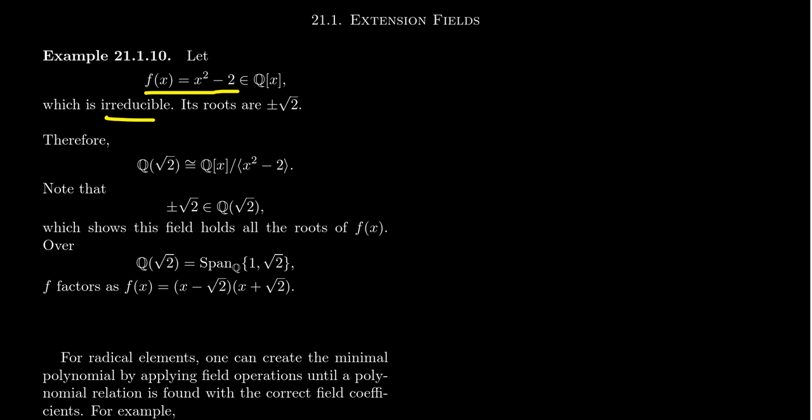So that makes f irreducible. There's an even easier criterion we could use: Eisenstein's criterion. When you look at all of the terms other than the leading and constant terms, they all have coefficient zero, so you can pick any prime. In particular, 2 divides the constant term but 4 doesn't, so by Eisenstein's criterion, that's an irreducible polynomial.